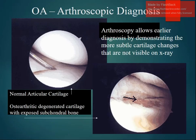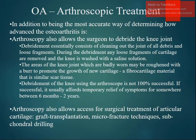Arthroscopic diagnosis allows earlier diagnosis by demonstrating more subtle cartilage changes not visible on X-ray. You can see the difference between normal articular cartilage and degenerated cartilage with exposed subchondral bone. Arthroscopy is the most accurate way of determining how advanced the osteoarthritis is and also allows the surgeon to debride the knee joint — removing all debris and loose fragments and washing the knee with saline solution.